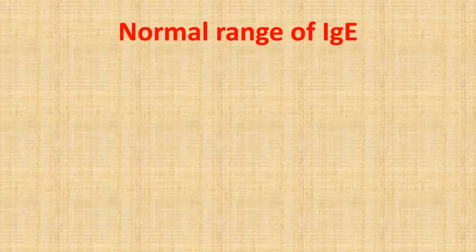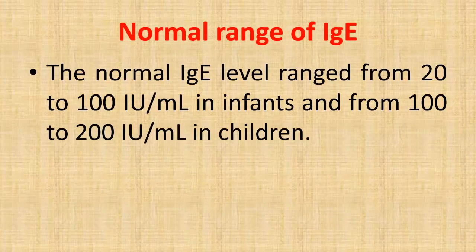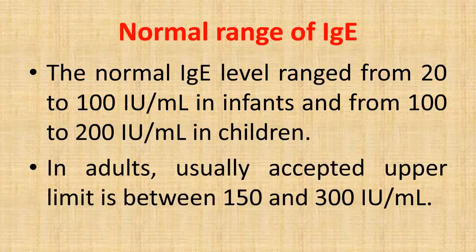The normal IgE level ranges from 20 to 100 international units per milliliter in infants, and from 100 to 200 international units per milliliter in children. In adults, the usually accepted upper limit is between 150 and 300 international units per milliliter.